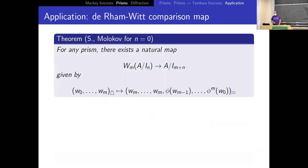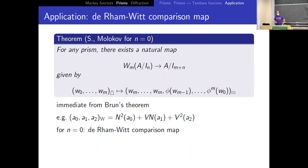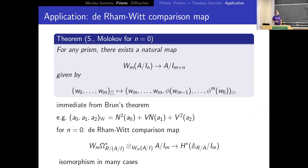For a more concrete application: for any prism there exists a natural map from W_{n,m}(A/I_m) to A/I_{m+n}. This was previously constructed by Molokov in the case n=0, and is almost immediate from Brun's theorem that Witt vectors are the free Tambara functor. Basically in Witt coordinates, (a_0, a_1, a_2, …) can be expressed just in terms of norms and Verschiebungs of those coordinates, so as soon as I know how to norm and Verschiebung in A I get this map. For n=0 this globalizes to a map from the de Rham–Witt complex of R over A/I to the mod-I_m prismatic cohomology, and this is an isomorphism in many cases.